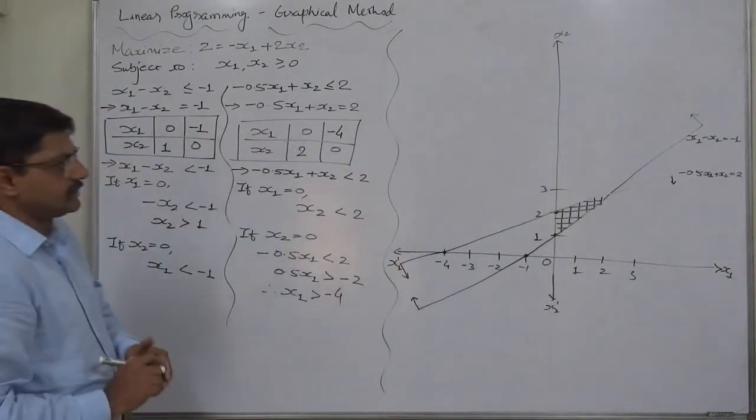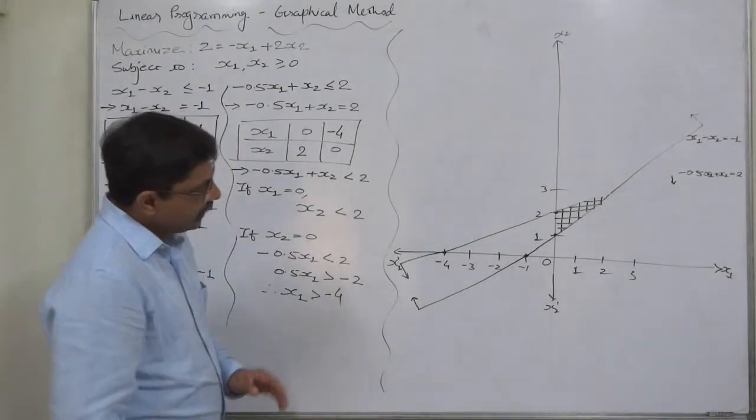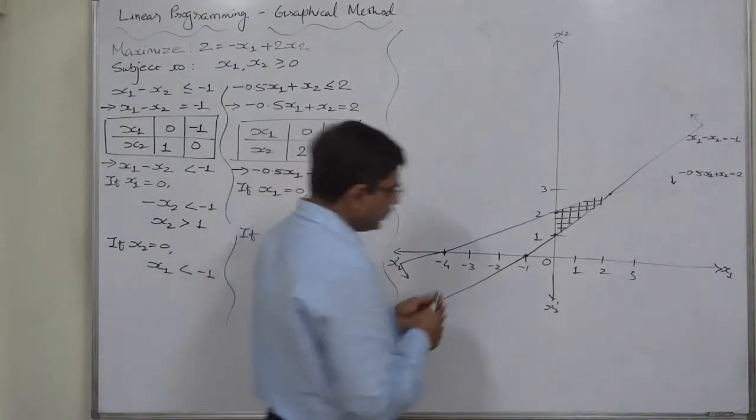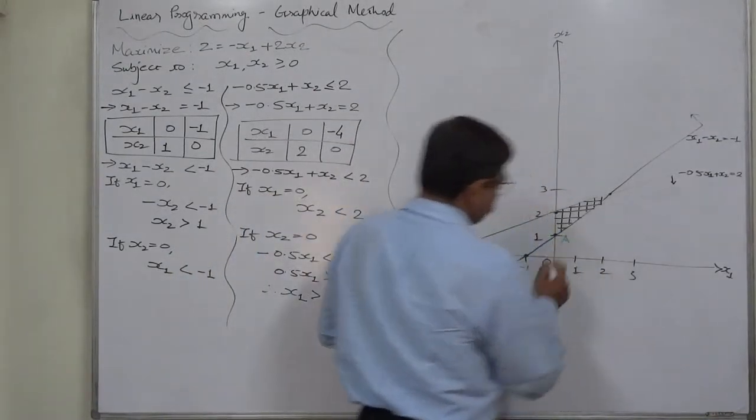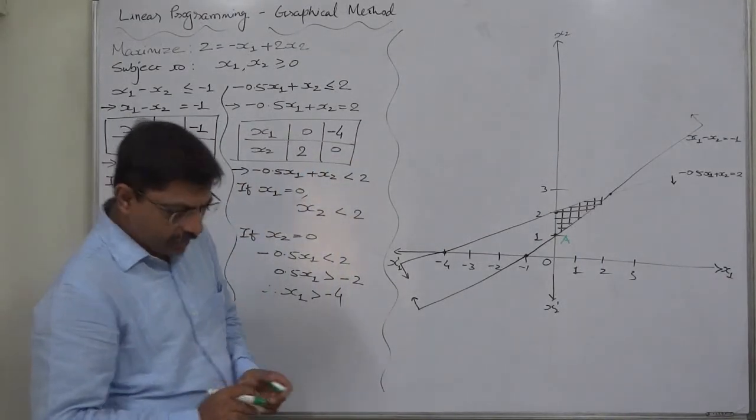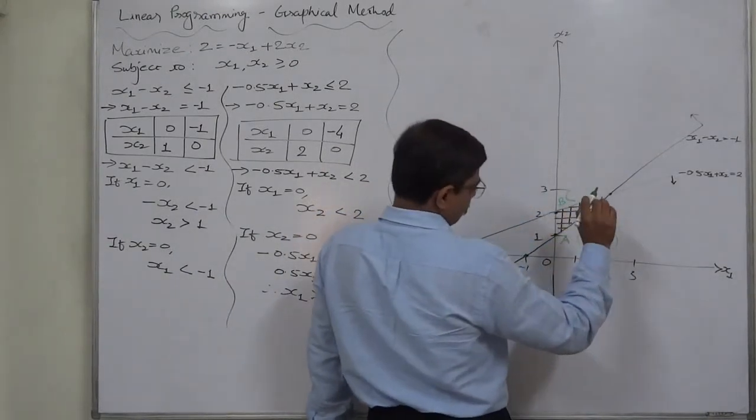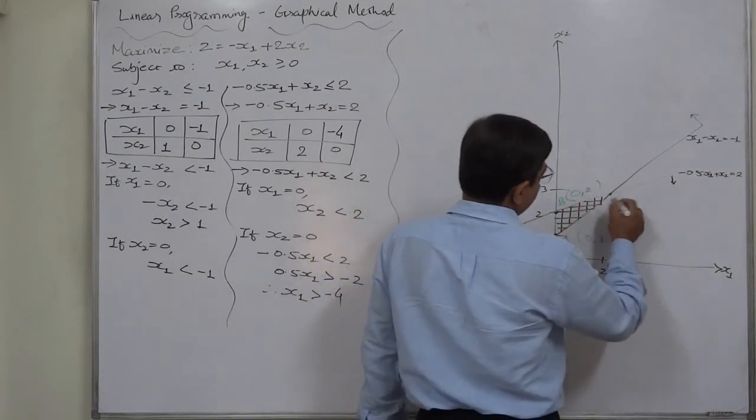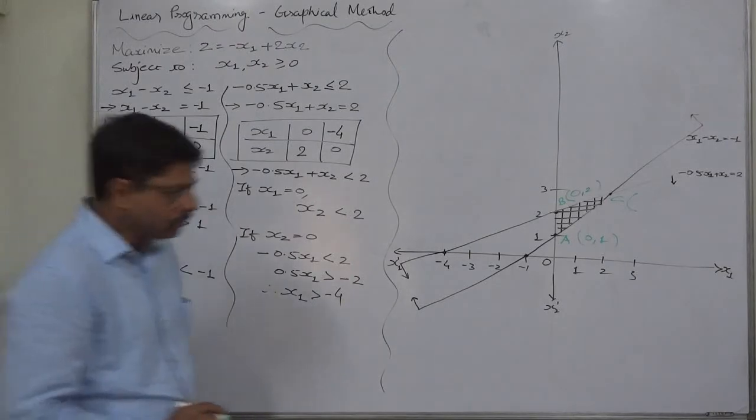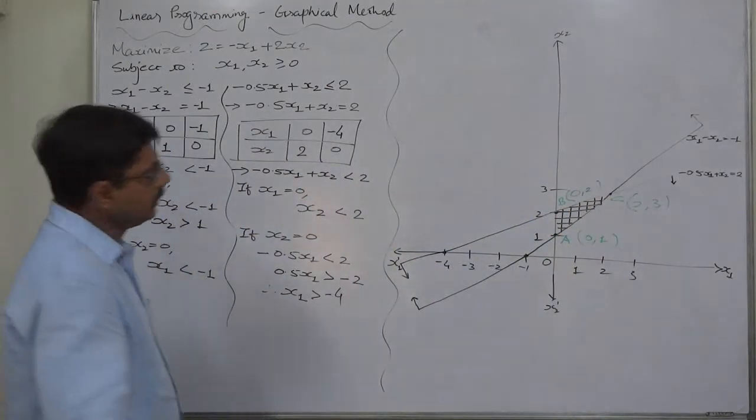Please take utmost care while you are dealing with this kind of graph. Only three corner points are there. This is A, because O is not there, 0,0 is not there. A is 0 and 1. B is 0 and 2, and this is C. On your graph paper, it should show 2 on x1 axis and 3 on x2 axis.